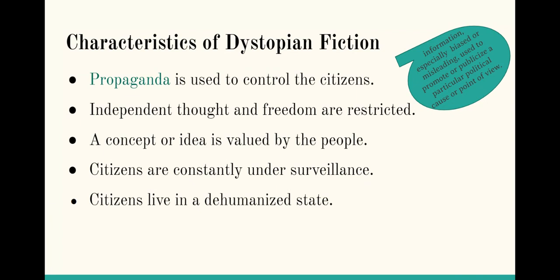There are a number of characteristics common in dystopian fiction, and we don't usually see all of these, but you'll probably see many of them as we read 'The Giver' as a class. First, propaganda is used to control the citizens. Propaganda is information — especially biased or misleading — that is used to promote or publicize a particular political cause or point of view. One prominent example was during World War II when the Nazi regime put out a lot of propaganda to make Jews look bad, putting out pictures of them looking goofy and messages indicating they were dangerous or otherwise less desirable.